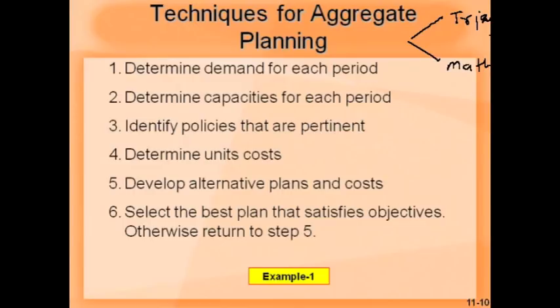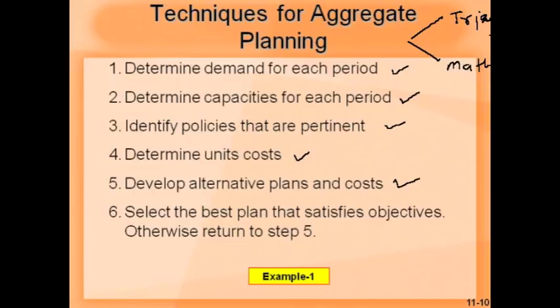Whichever method is used, the steps are: determine demand for each period (input to aggregate planning); determine capacities for each period from capacity planning; identify pertinent policies — remembering we work within the framework of the business plan; determine unit costs for regular time, overtime, or subcontracting; develop alternative plans and costs for each situation; then select the best plan that satisfies objectives. If using trial and error, you may not get the best plan on the first shot, so you return to step 5 and choose another alternative.